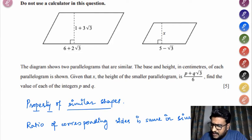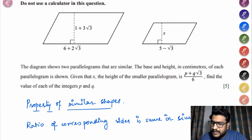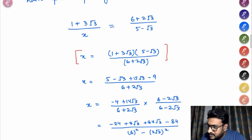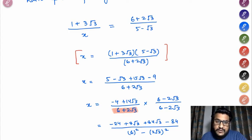So using that, I can relate the height of the two parallelograms. That is ratio of height of two parallelograms should be equals to the ratio of sides of parallelograms, because they are similar and it has to be same. So equating this, now simplifying, cross multiplying, this will get X equals to 1 plus 3√3 multiplied by 5 minus √3 divided by 6 plus 2√3. Once you simplify and multiply, you get the numerator over here. Now we know that our denominator cannot be irrational, so we need to rationalize this.